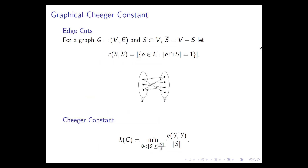Let us start with the graphical case. Suppose we have a graph—a one-dimensional complex—and a partition of the vertex set into S and S-complement. We look at all edges between S and S-complement. The Cheeger constant of the graph is the minimum of the size of this cut normalized by the size of the smaller of the two sets: the minimum over S (with |S| ≤ |V|/2) of |E(S, S-complement)| / |S|. This quantity measures the connectedness of the graph.